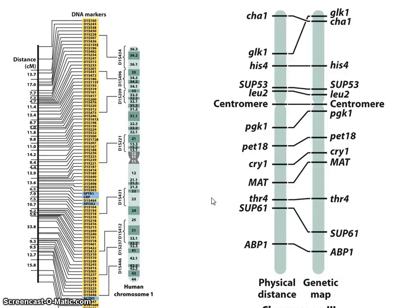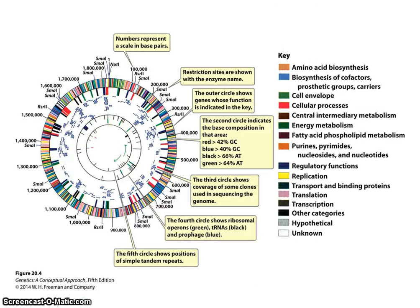Linkage maps — genetic maps — are limited in resolution. There's only so close together we can get, and there's only so far apart we can get, estimating things through recombination rates, whereas the physical distance is obviously much more accurate. The very first genome to be sequenced is from bacteriophage lambda in 1982, and the first free-living organism to be sequenced — phage is a virus — was the bacterium Haemophilus influenzae in 1995.